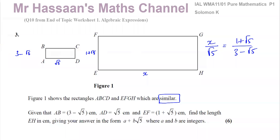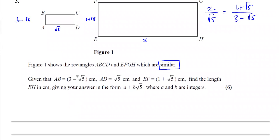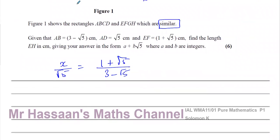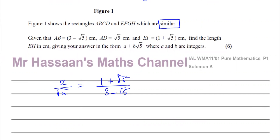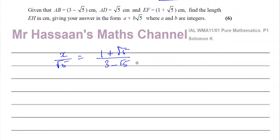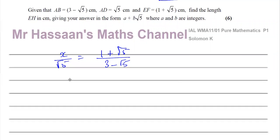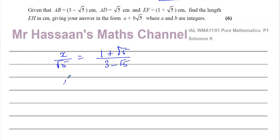So we have x over √5 equals (1 + √5) over (3 − √5), and we've got to find the value of x, which is EH. Cross-multiplying — multiplying both sides by √5 — gives x equals √5 times (1 + √5) divided by (3 − √5).